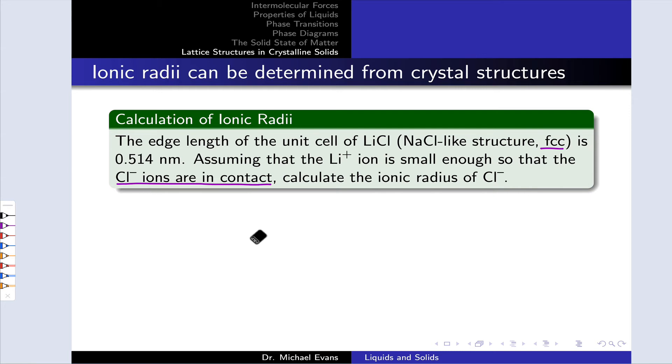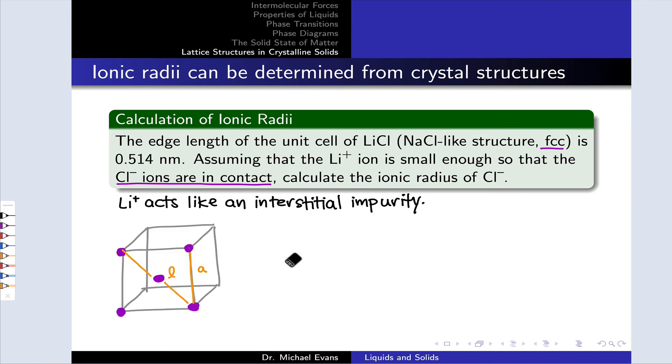The thing to keep in mind is that if the Cl- ions are in contact with one another, which is stipulated in the problem, then we can almost think about Li+ as a kind of interstitial impurity in the FCC lattice of Cl- anions. In drawing a picture of the unit cell and analyzing the chloride anions, we actually can omit the lithium ions entirely since they're not going to have any impact on the dimensions of the unit cell.